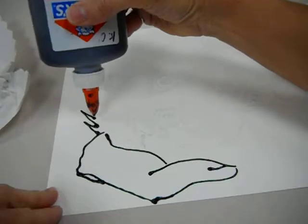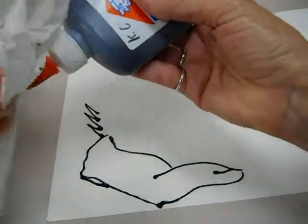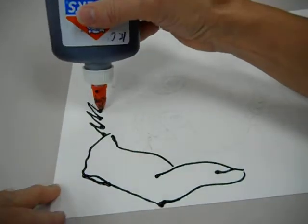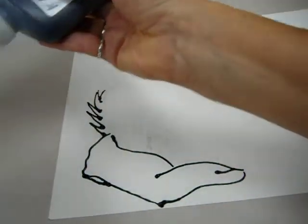And if your line starts getting really thick, once it's thick, there's really nothing we can do to fix it. It's just going to be a really thick line and kind of blobby.